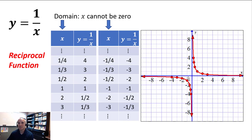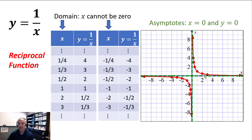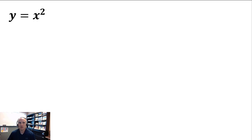You'll notice that this graph is symmetric over the origin — this is what we call an odd function. Something else unique about this particular parent function is that because the graph gets infinitely close to the Y and X axis, we call those asymptotes, which I've indicated with dashed green lines. Asymptotes are lines — or they don't have to be lines necessarily, but curves — that your graph is getting infinitely close to on the ends, as it goes up, right, down, or left. It gets infinitely close to X equals zero (which is the Y axis) and Y equals zero (which is the X axis). The Y equals one over X function may be one of the more complex ones in this video.